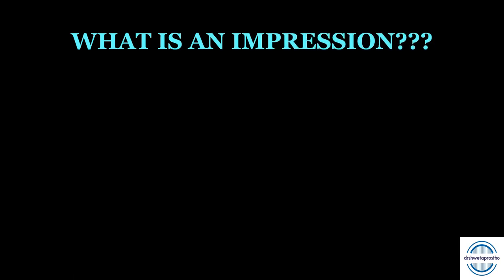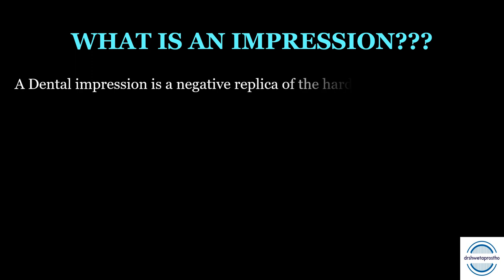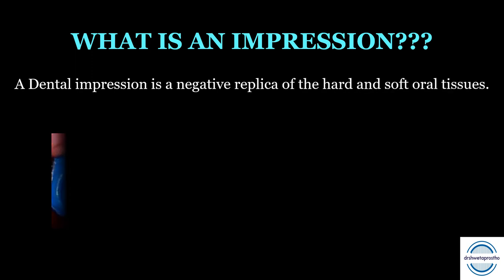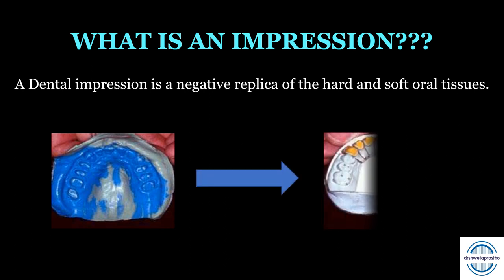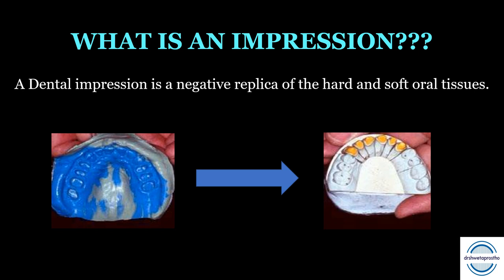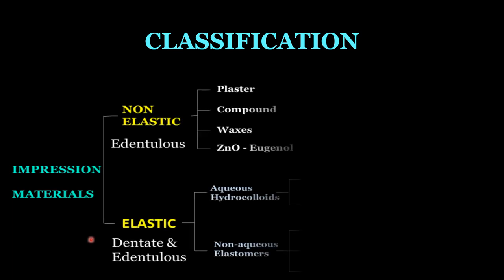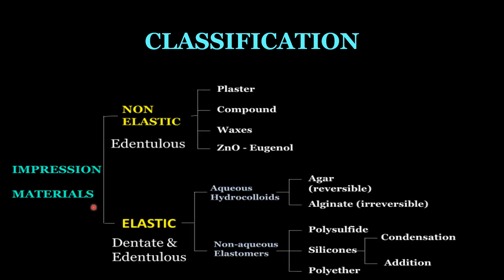First of all, what is an impression? A dental impression is the negative replica of the hard and soft oral tissues. We make the impression, pour it with a gypsum product, and get the positive replica — that is the cast, die, or model. Now let us quickly revise the classification of impression materials. Based on elasticity, they can be non-elastic or rigid impression materials, mainly used for edentulous patients where there are no undercuts.